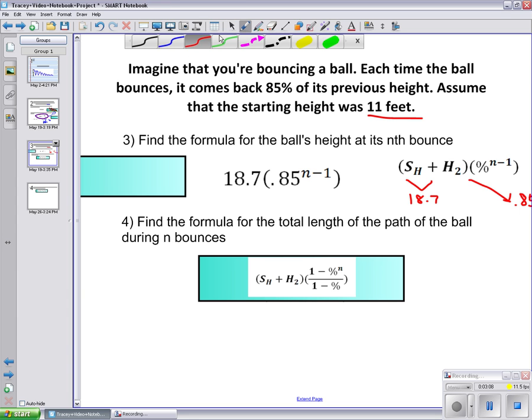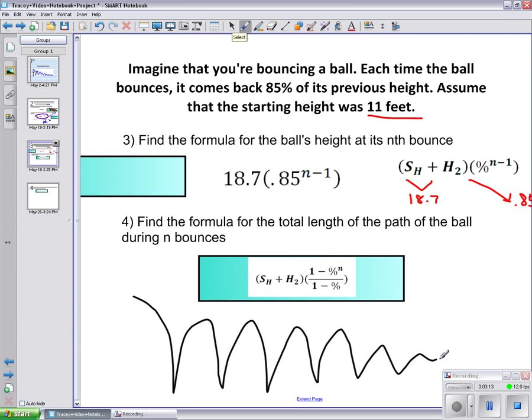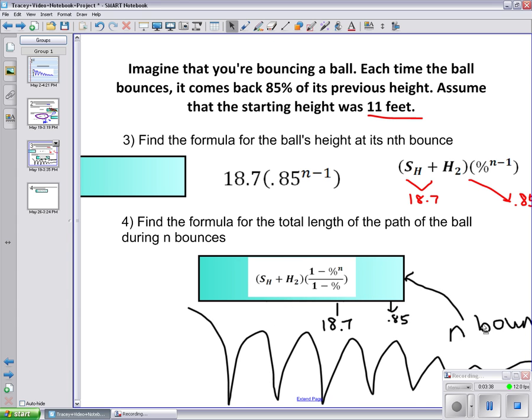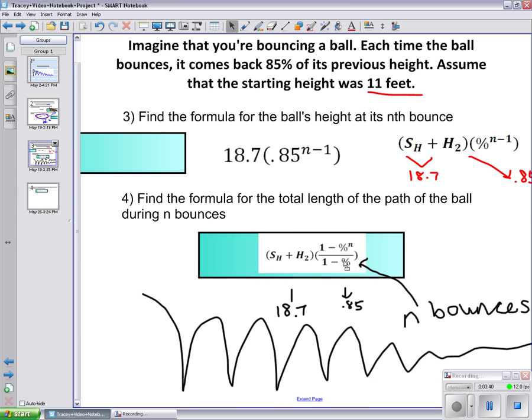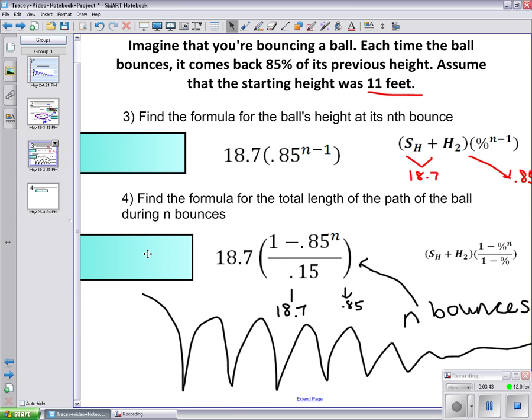Find the formula for the total length of the path of the ball during n bounces. Now you have this formula. Visual representation and so on. Don't know how many bounces there are, so you're going to use the formula: starting height plus second height times 1 minus the percent to the nth power over 1 minus the percent. You're going to leave n since you don't know how many bounces there are, leave 0.85 as the percentage, and input 18.7 as your first value.